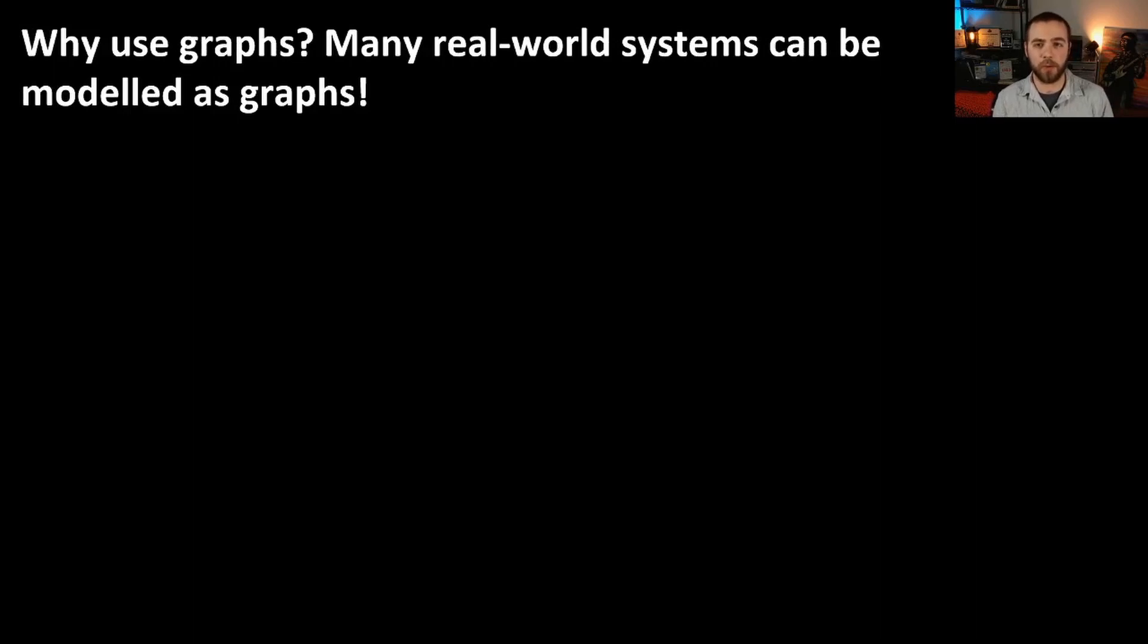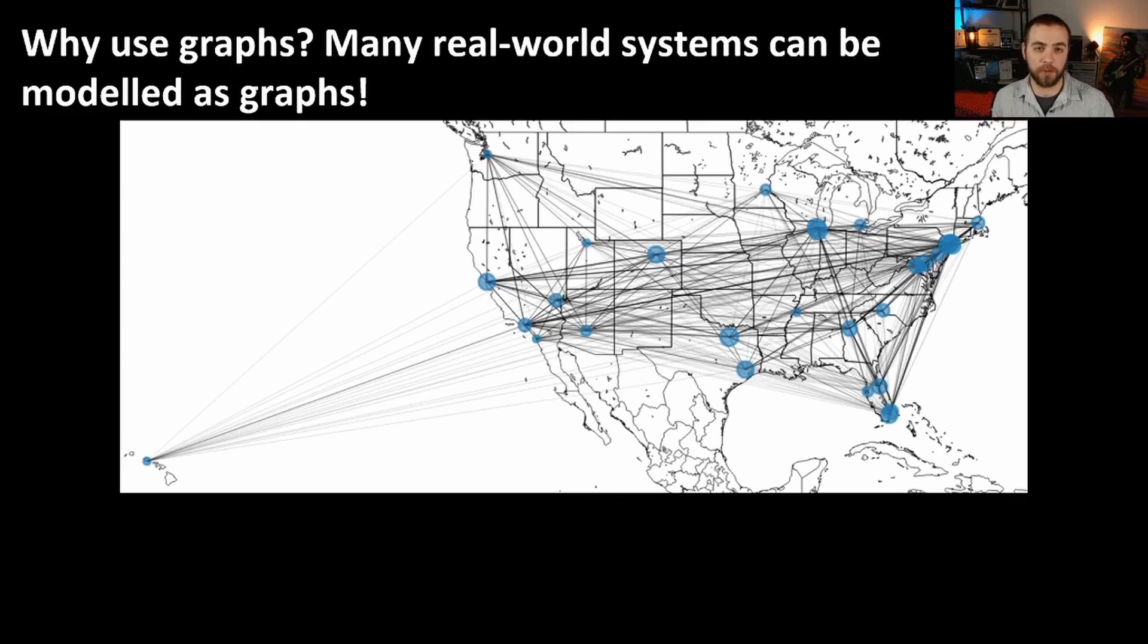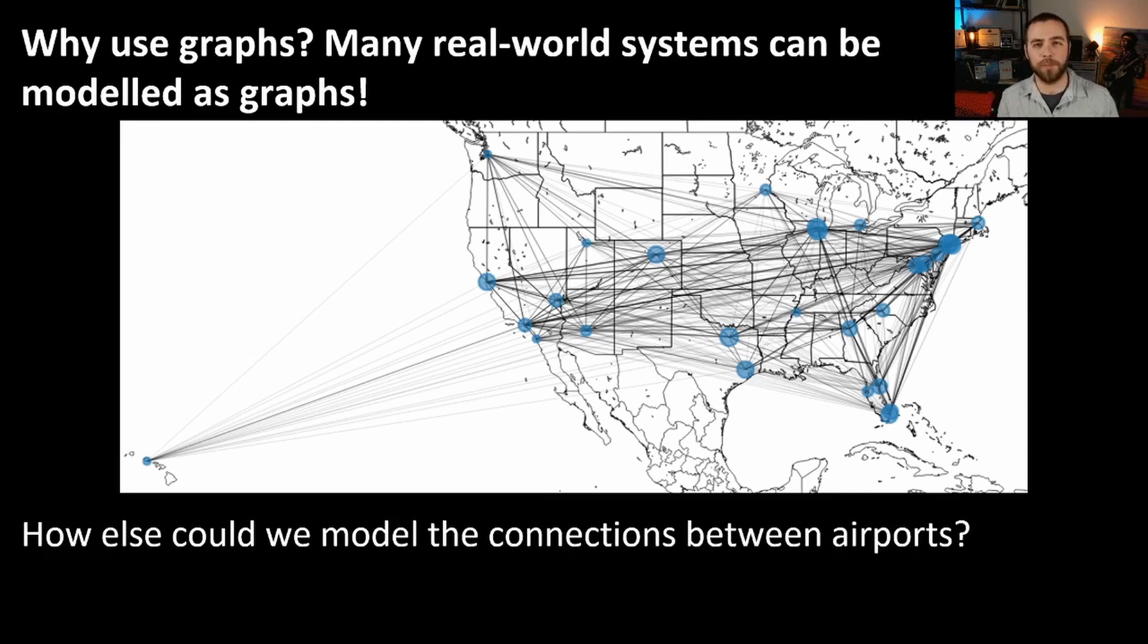So to answer this question of why we might want to use graphs, I'm going to come at it from two different angles. The first angle is based on reality, and that many real world systems can be modeled as graphs. So as an example, we have some of the busiest airports in the United States right here. And my question to you is how else would we want to model, say, delays between airports? It's important that you have connections between airports in your model, because of course delays at one airport will affect the delays at another airport.